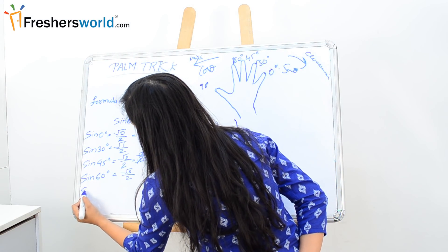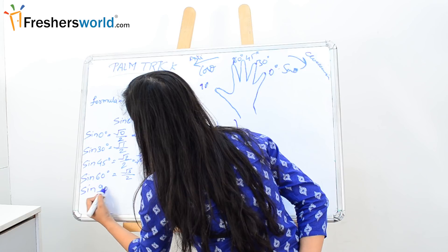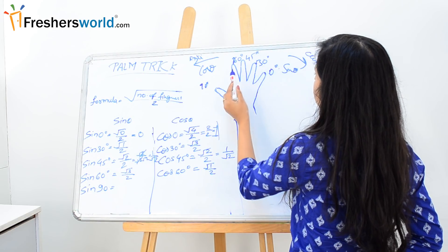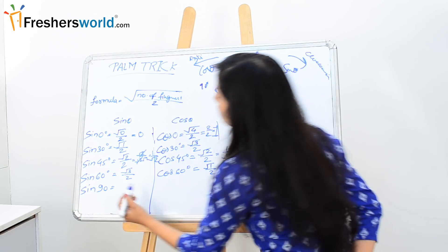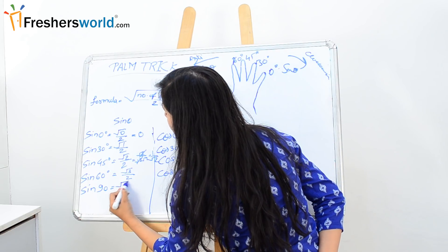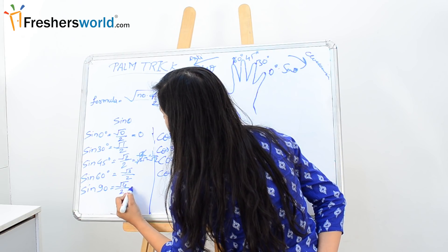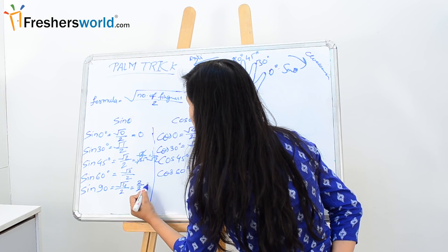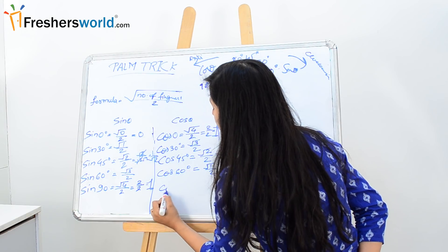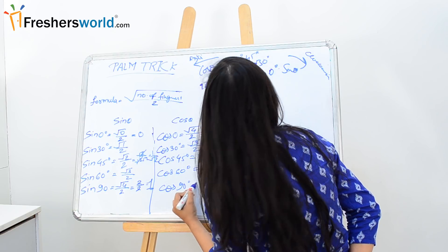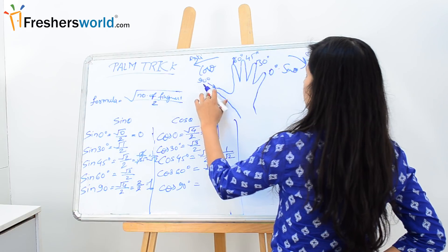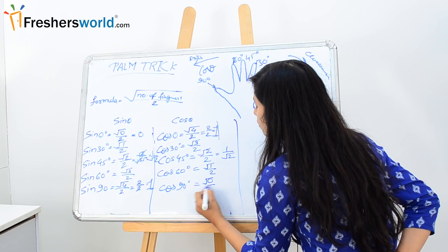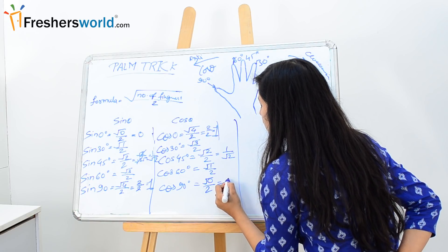Now sin 90 degree. For sin 90, counting clockwise: 1, 2, 3, 4 — means root over of 4 by 2, which is 2 by 2, that is 1. For cos 90 degree, moving anti-clockwise, we have number of fingers which is 0, so 0 by 2, which means 0.